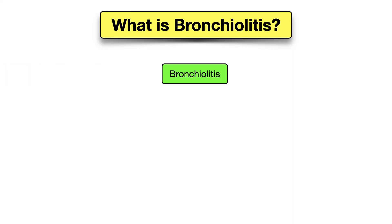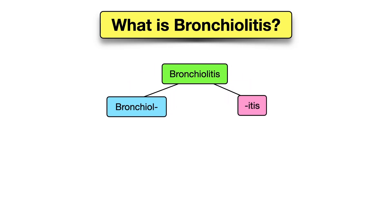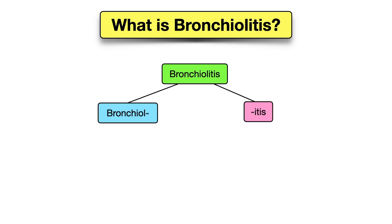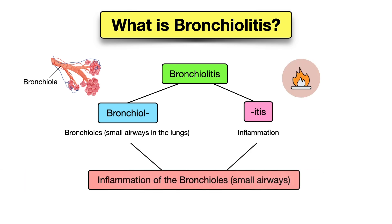First we have to ask ourselves: what is bronchiolitis? The easiest way to understand this is to break down the word. We have 'bronchial,' which refers to the bronchioles — the small airways in the lungs — and we have 'itis,' which means inflammation. So bronchiolitis is inflammation of the bronchioles, or the small airways of the lungs.